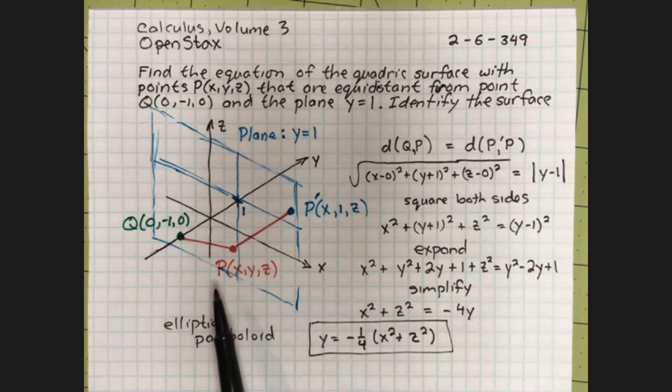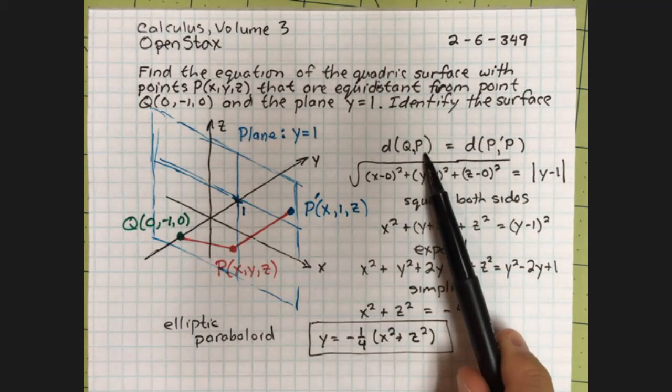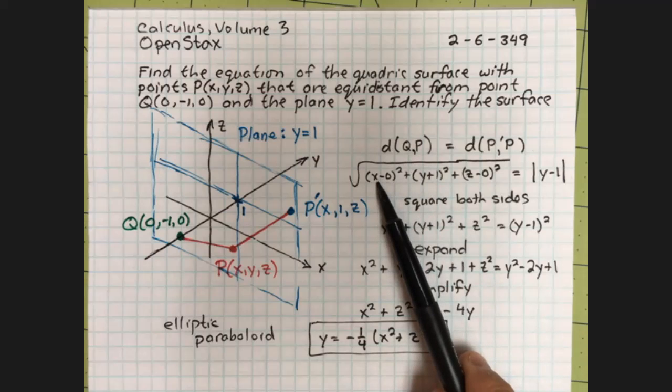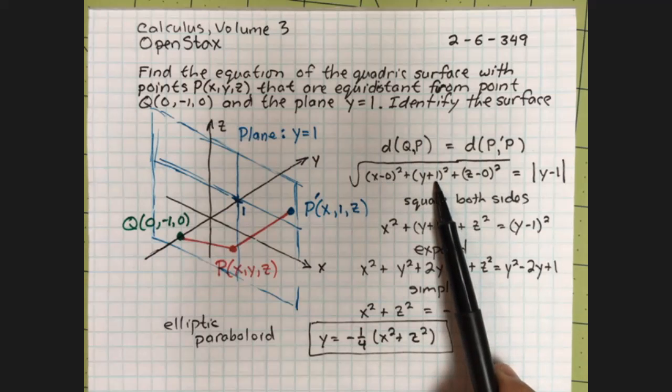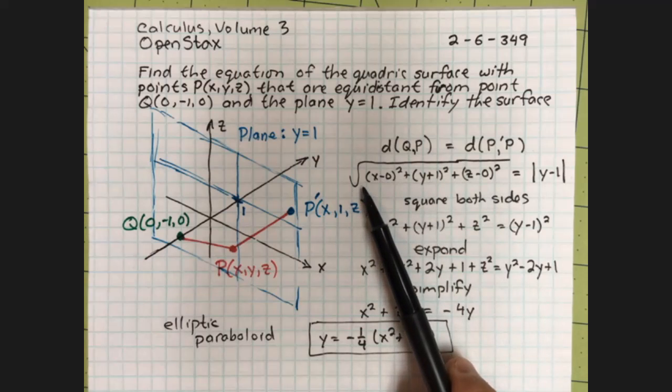Well, by the distance formula, the distance from P to Q, from Q to P: square of the X difference, plus the square of the Y difference, plus the square of the Z difference, square rooted, Pythagorean theorem.